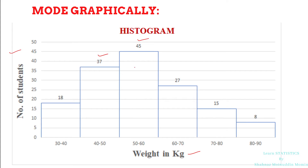Let us draw that straight line. This is the line connecting the right-hand top corner of the rectangle with maximum height to the right-hand top corner of the previous rectangle. Similarly, the next step is to connect the left-hand top corner of the maximum rectangle with the left-hand top corner of the next rectangle, which has height 27. Let us connect those left-hand top corners. This is the line joining them. After doing this, let us search for the point of intersection of these two lines.